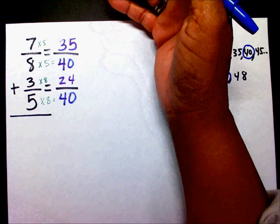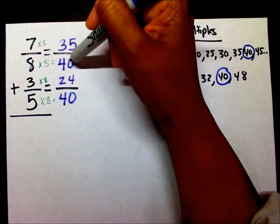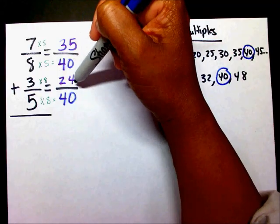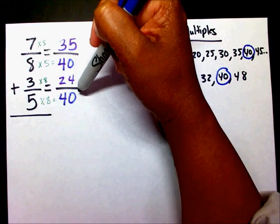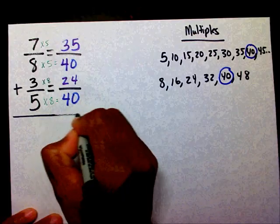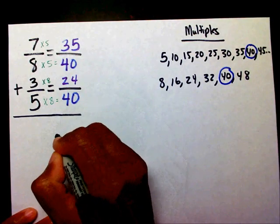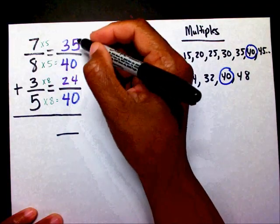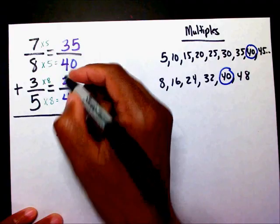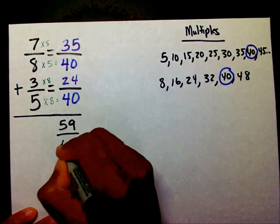They just look different. If I were to reduce thirty-five fortieths, it would reduce down to seven-eighths. If I were to reduce twenty-four fortieths, it would reduce down to three-fifths. Now that I have the same denominator, I'm going to add my numerators. Thirty-five plus twenty-four is fifty-nine, and I'm going to bring down my new denominator.